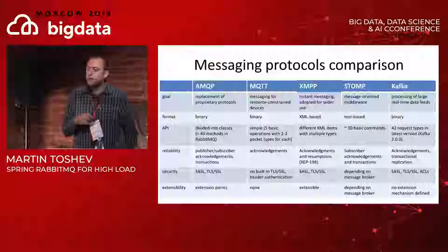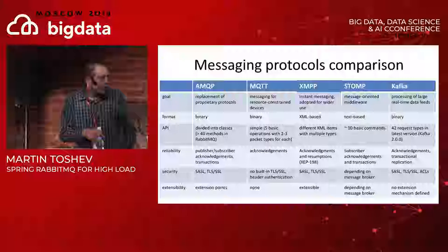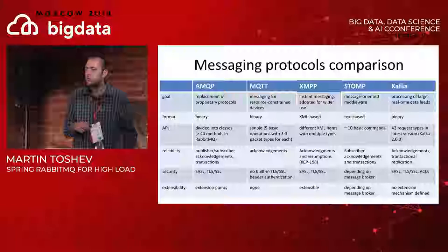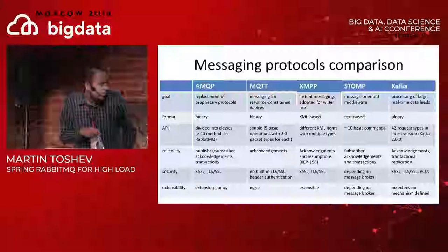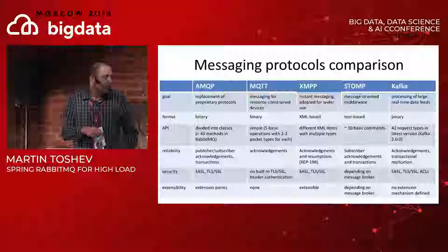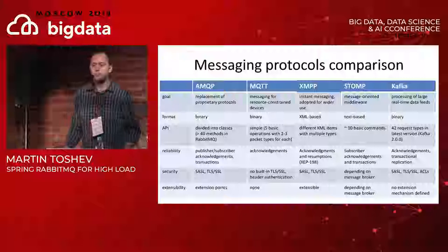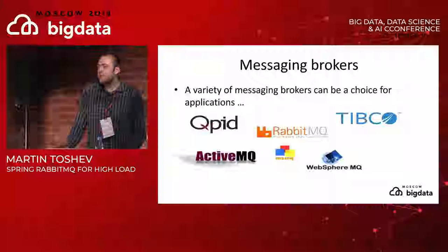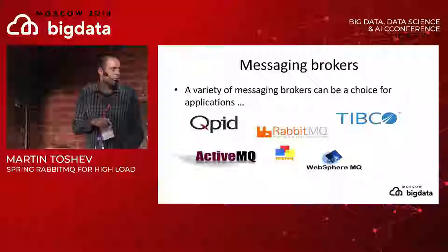In terms of reliability, most protocols provide some form of reliability. For RabbitMQ specifically we have publisher and subscriber acknowledgements, and transactions - you can create transactions in the whole message processing pipeline. Kafka provides similar mechanisms like acknowledgements and partitioning across Kafka nodes. In terms of extensibility, AMQP provides some extension points while for Kafka there is no clear definition of extension points. You can use this comparison diagram to evaluate the various messaging protocols before choosing a broker.